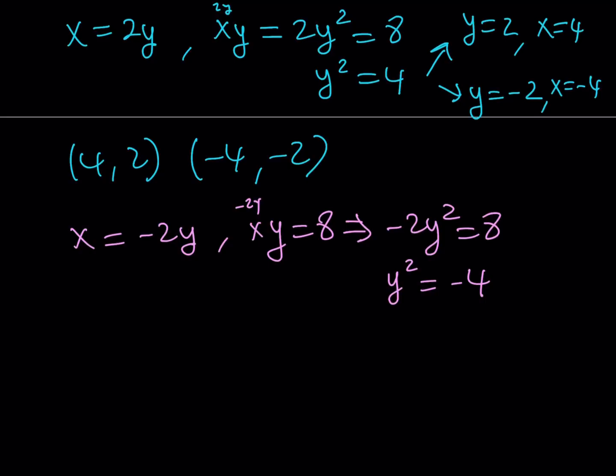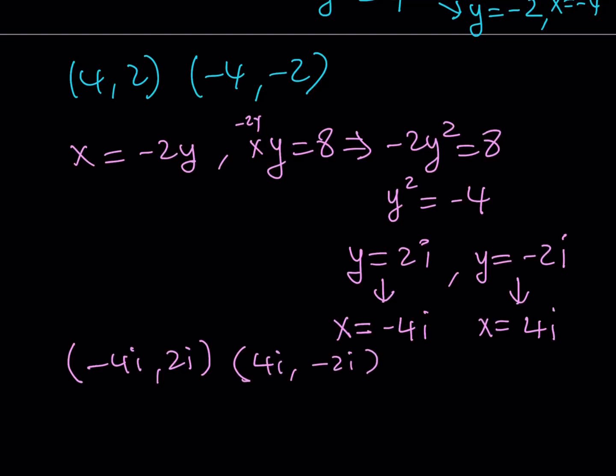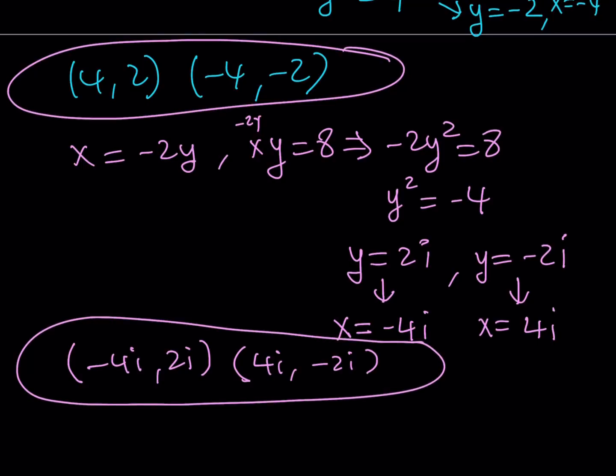Negative 2y squared is equal to 8, which means y squared equals negative 4. Now what is that supposed to mean? It just means that we don't have any real solutions, but we can still proceed. We get y equals 2i and negative 2i. We knew that x equals negative 2y, so if you multiply both of these solutions with negative 2, we get x equals negative 4i and x equals 4i. So this gives us another set of ordered pairs, (-4i, 2i) and (4i, -2i).